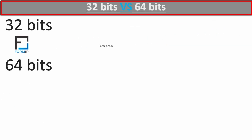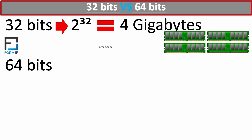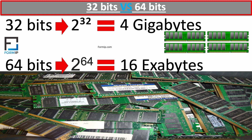Processors, whether Intel or AMD, can be available in 32-bit or 64-bit versions, much like operating systems. The difference is the way they handle memory. A 64-bit processor will process a larger amount of data than a 32-bit processor. 32-bit processors normally can't address more than 4 gigabytes of memory, while 64-bit processors can handle 16 exabytes — which is 4 billion times more memory than a 32-bit processor. This number is so huge that we can effectively say it is unlimited.